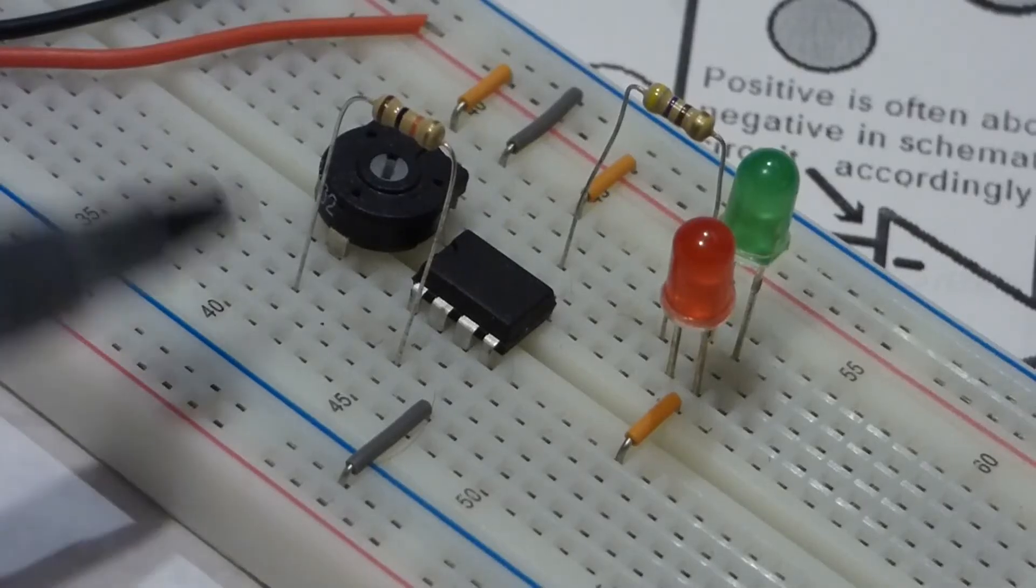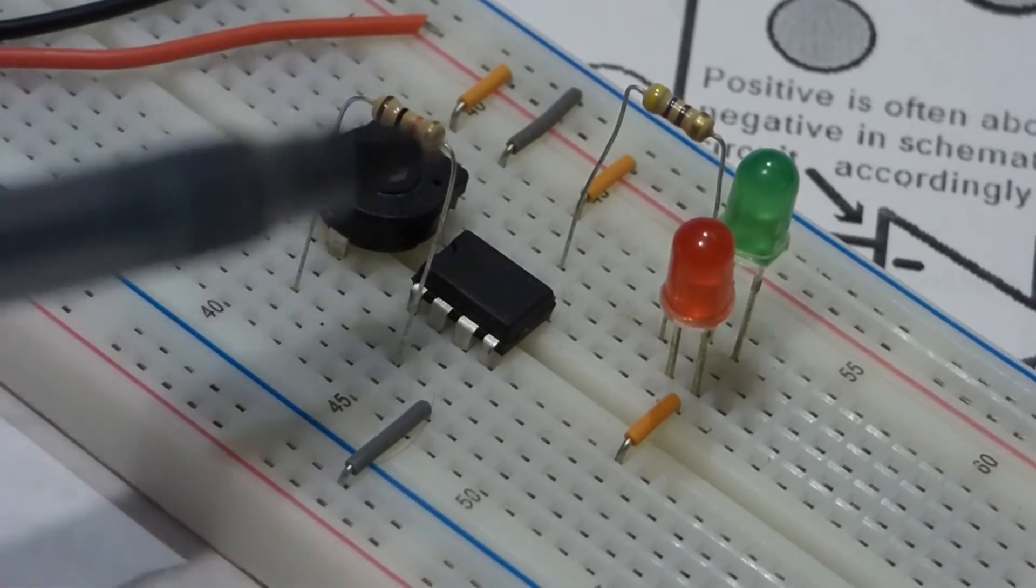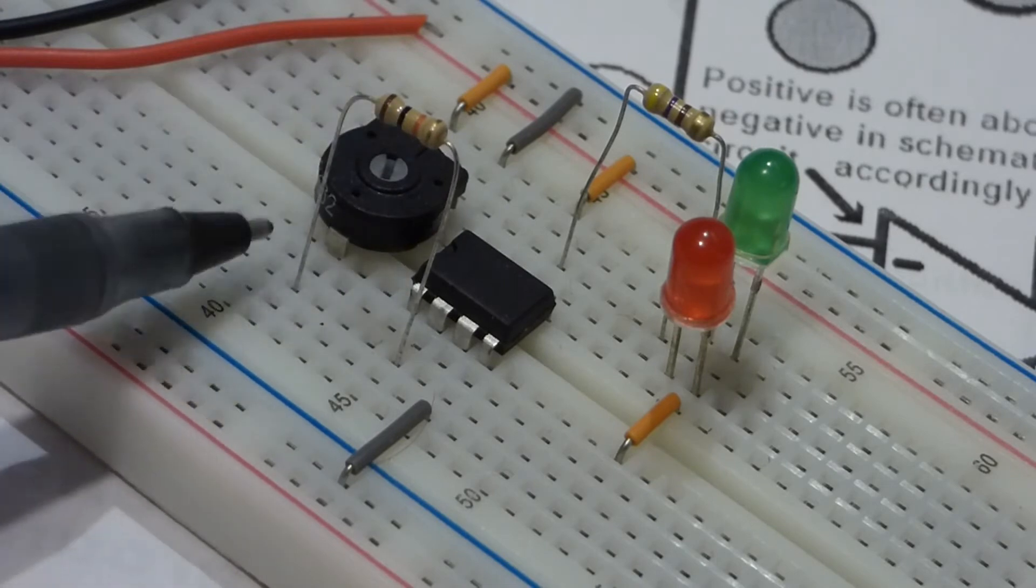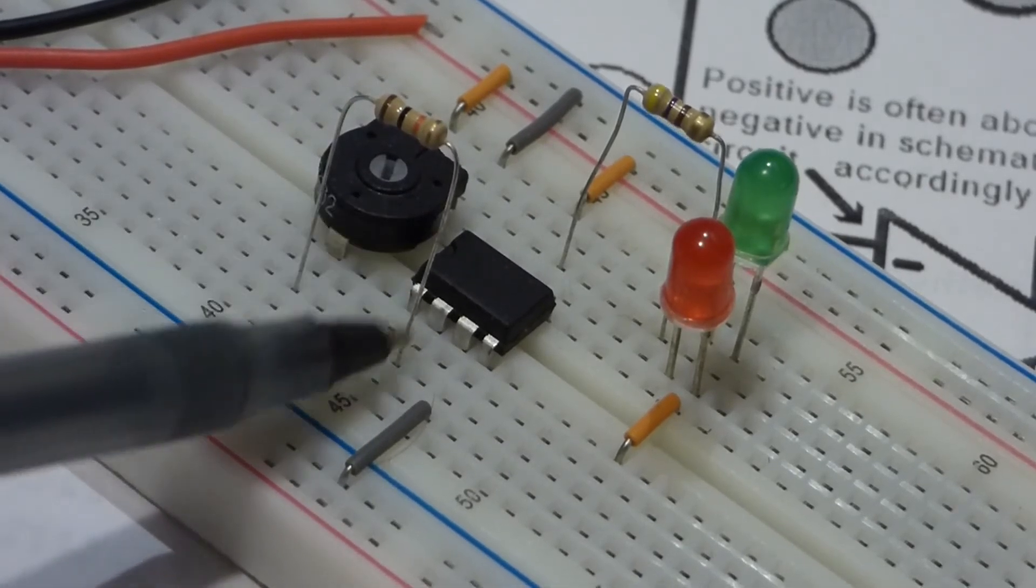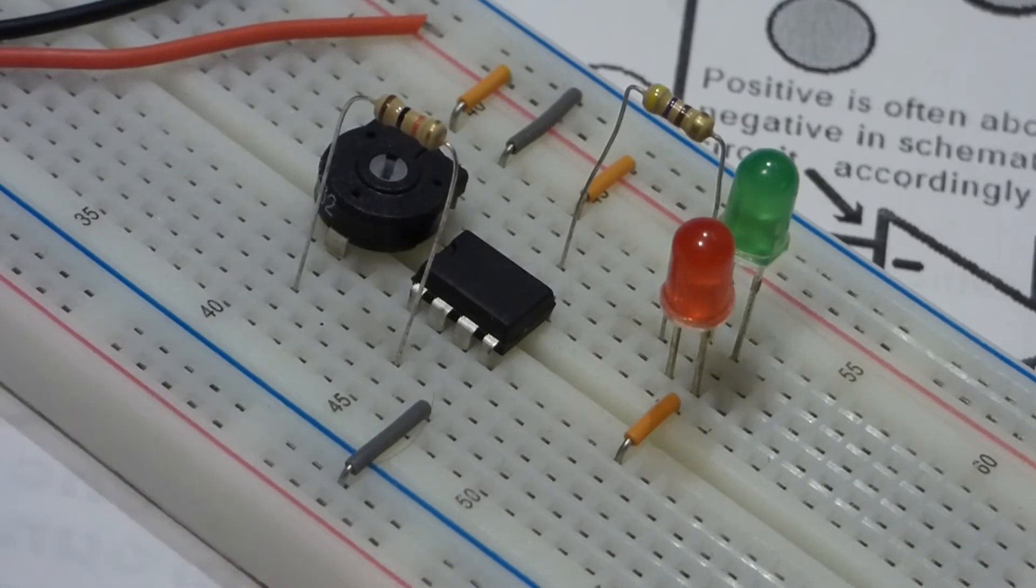So here's a close up where you can see it a lot better. We got the trim pot here and then this is a 10k resistor, 10,000 ohm resistor, comes from there to the inverting input. That's why the output was the opposite of the voltage that we gave.